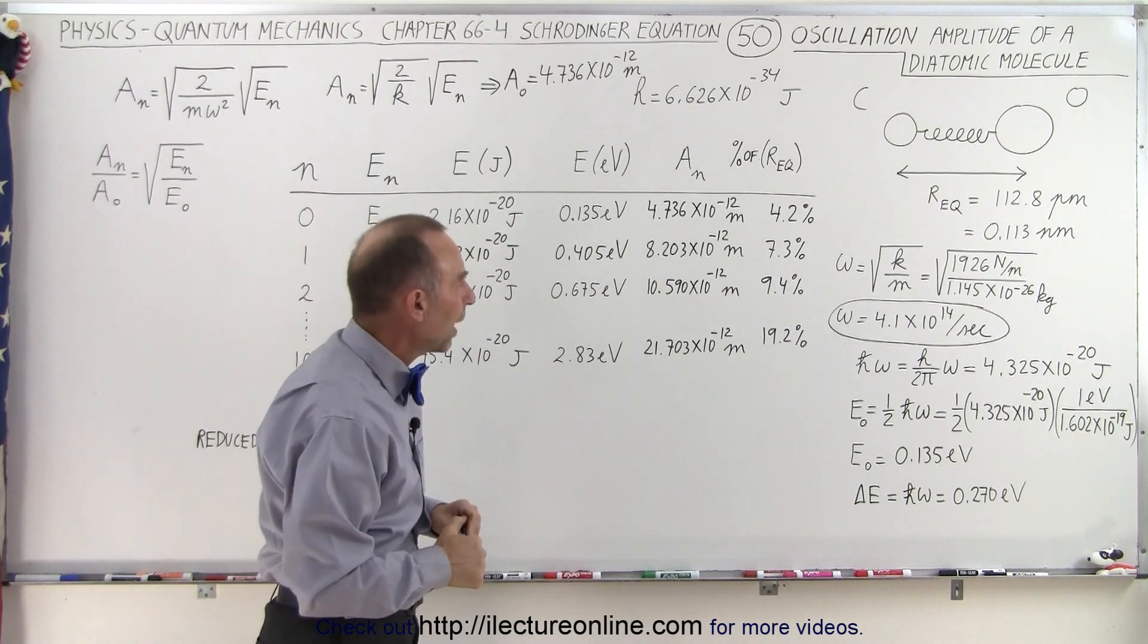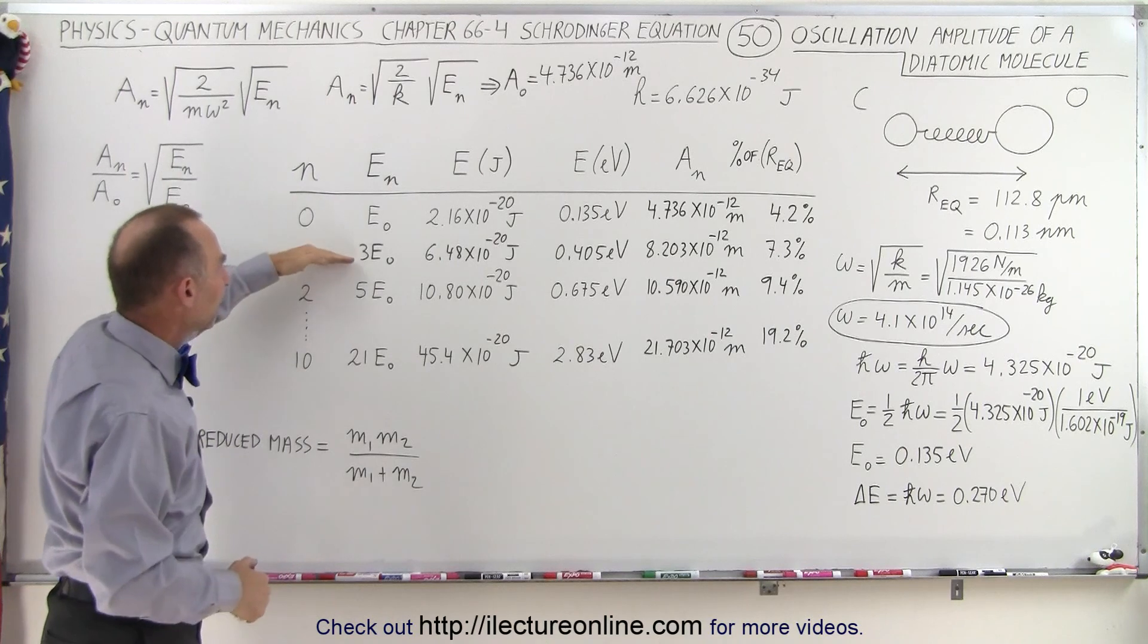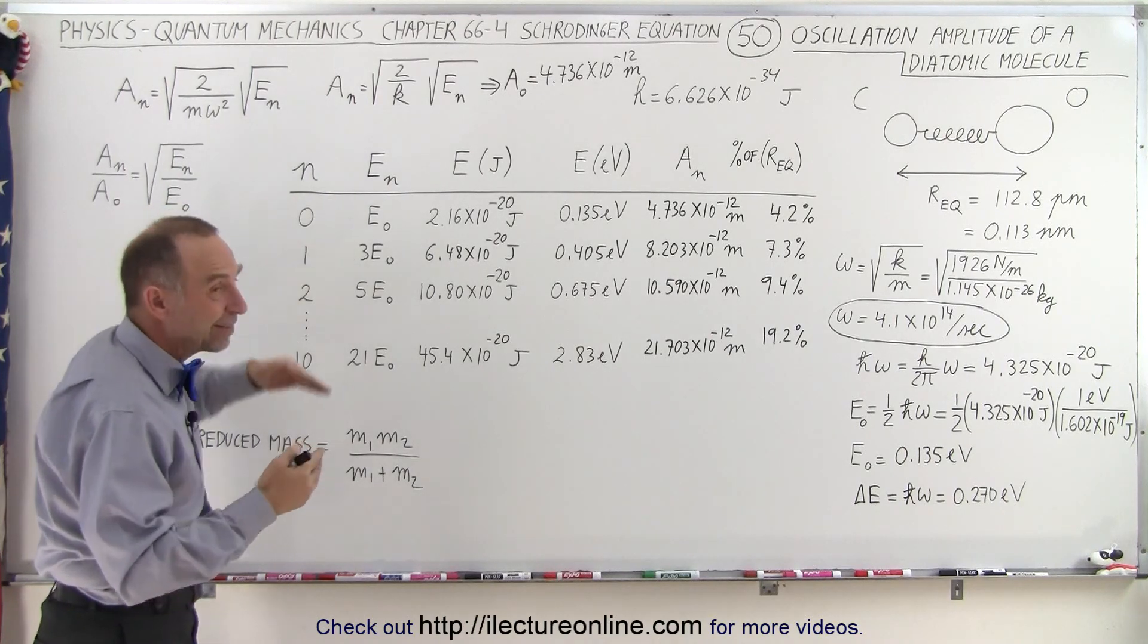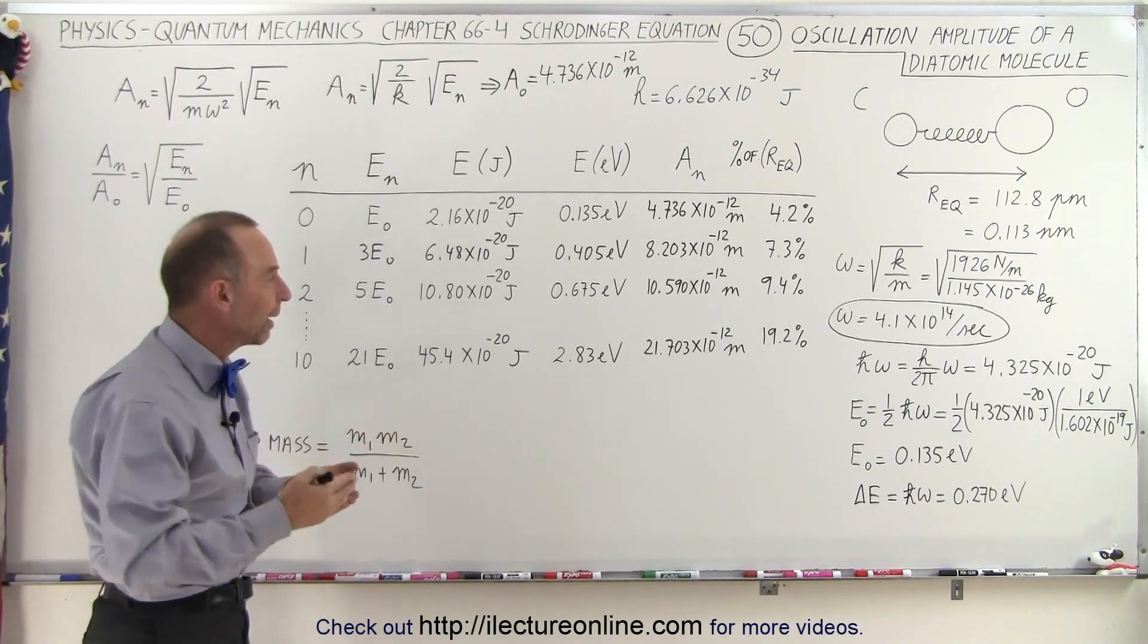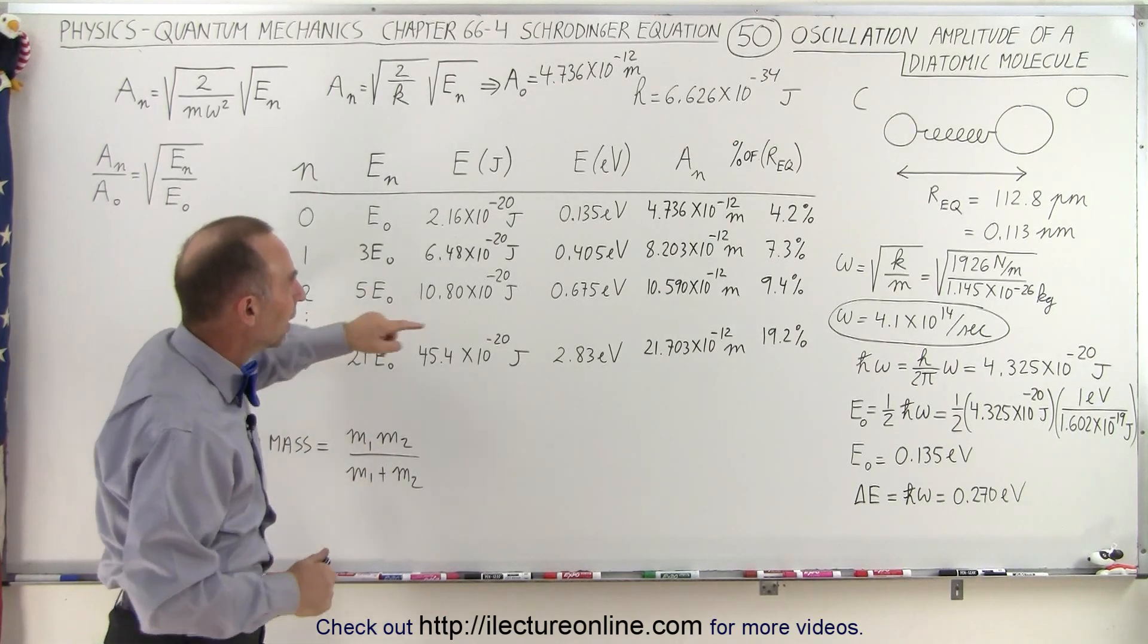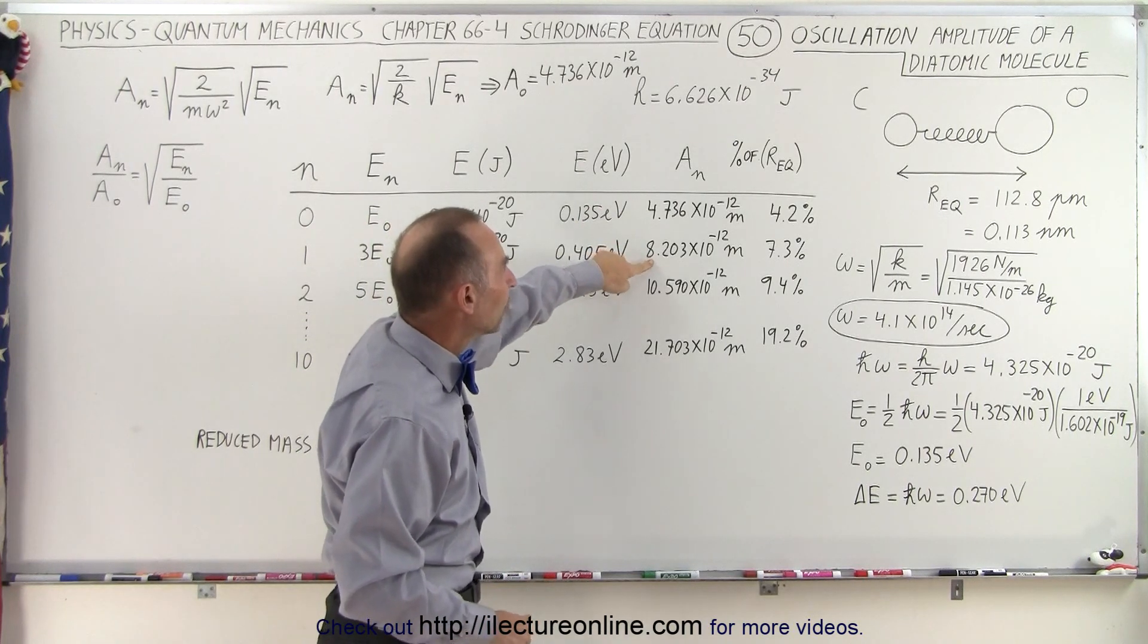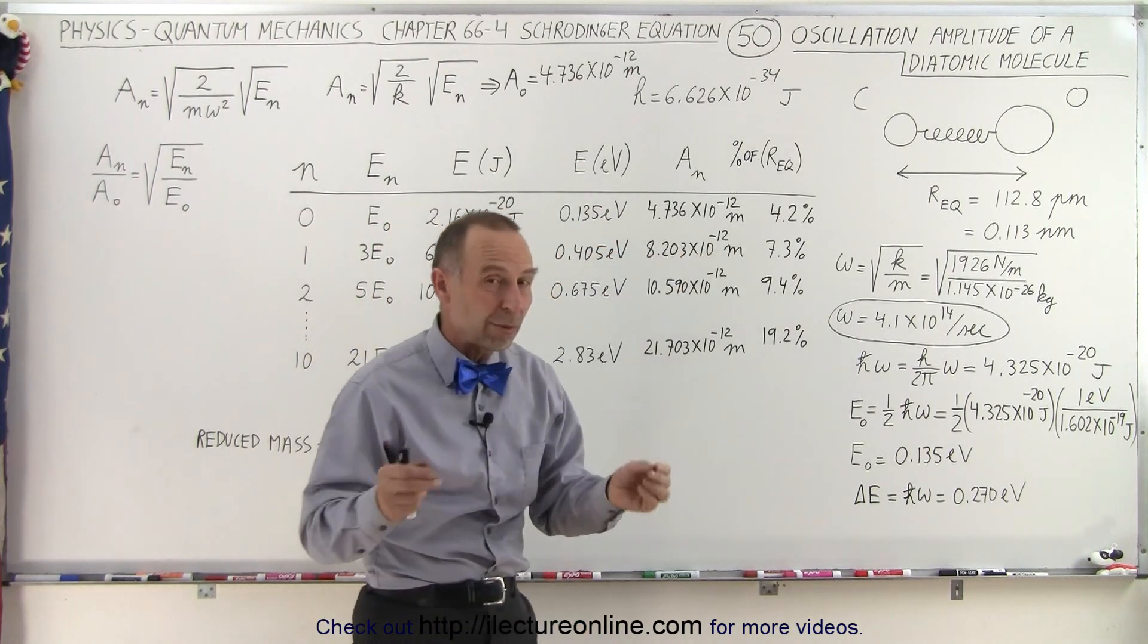When we jump to the next level, when n equals one, we now have three times the energy. That means that the amplitude will increase by the square root of three. That gives us now an amplitude of about 8.2 picometers, which means it's about 7.3 percent of the distance between the atoms.